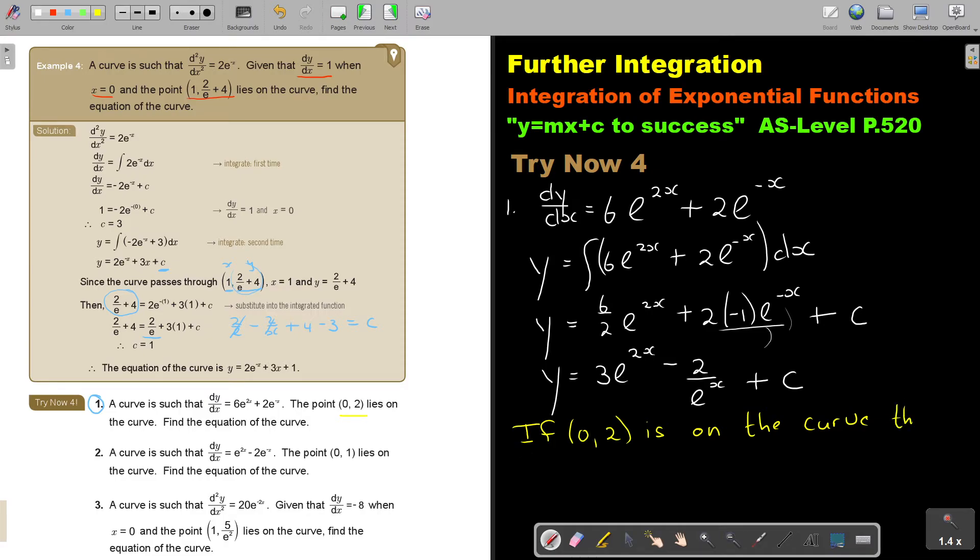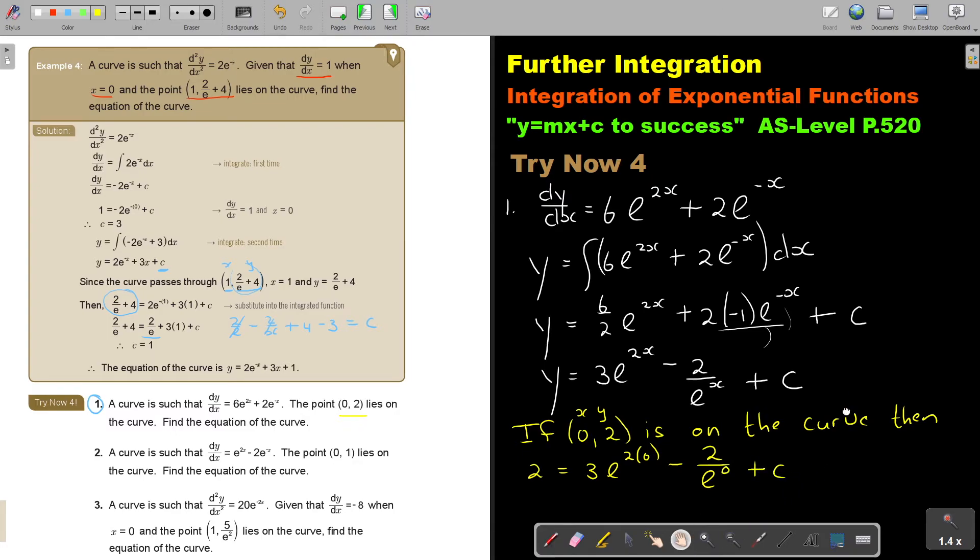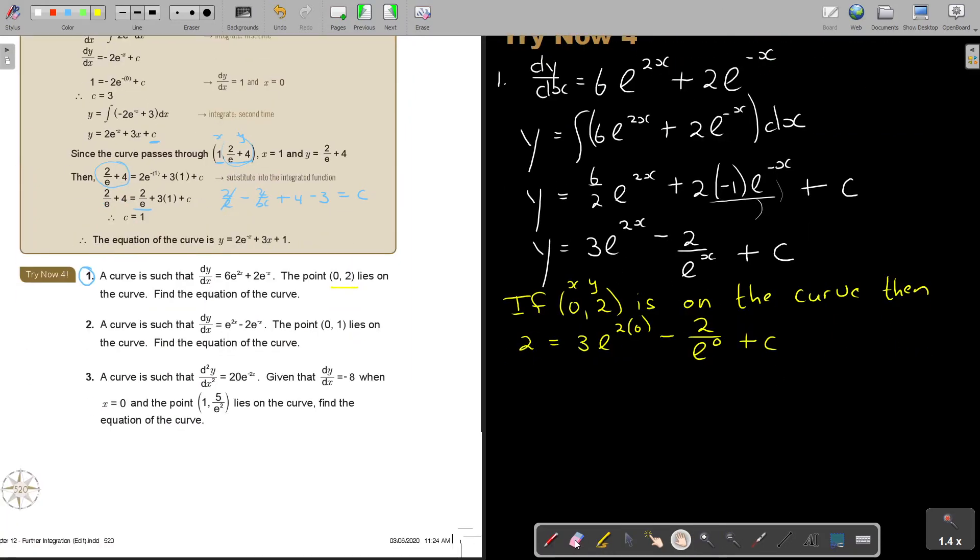So in the place of y, you put 2. In the place of x, I'm going to put 0. Then I'm going to move it up. And this is going to be 2.